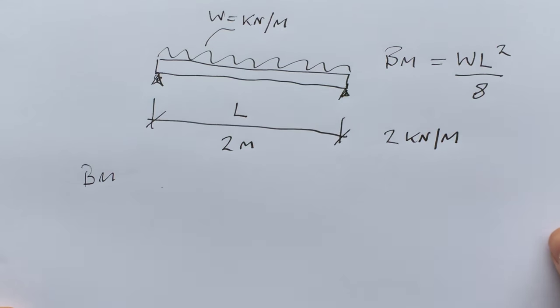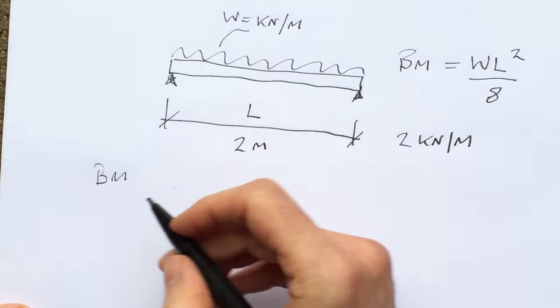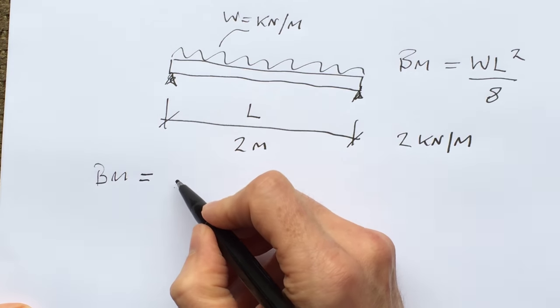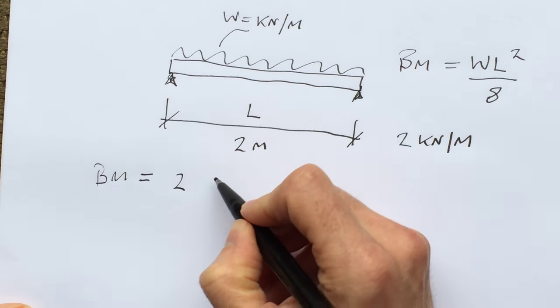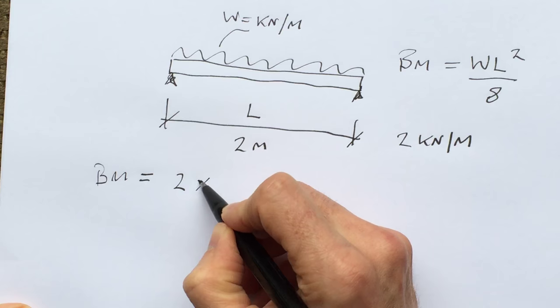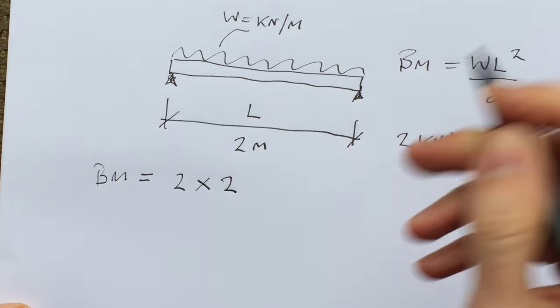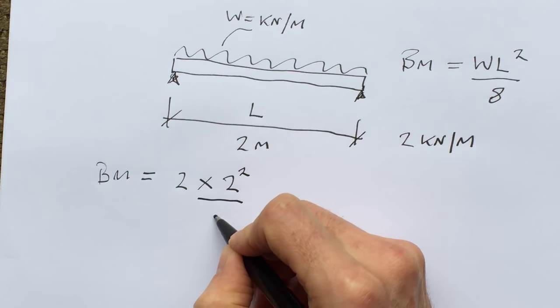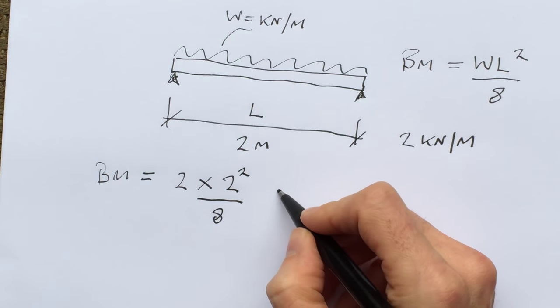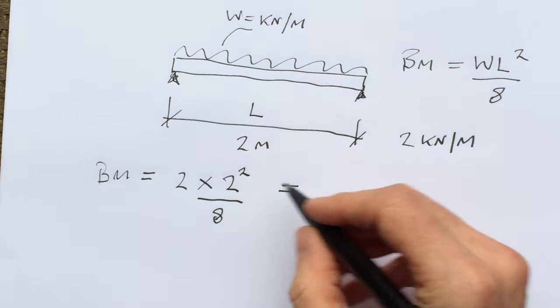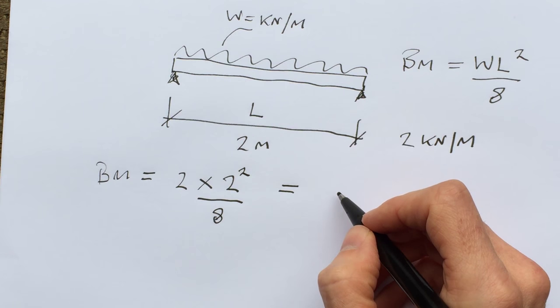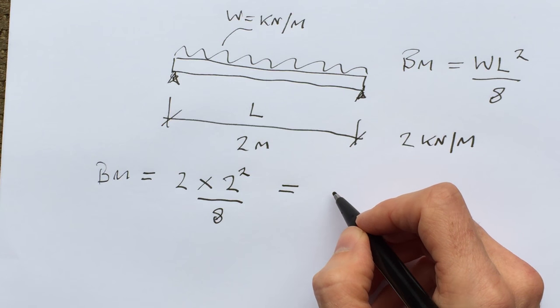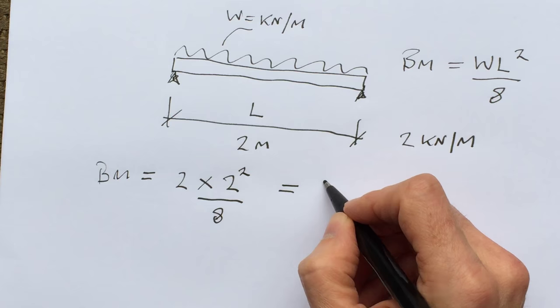The bending moments therefore are two kilonewtons per meter times two, and that squared, all over eight. So two squared is four, two times four is eight, divided by eight is one.